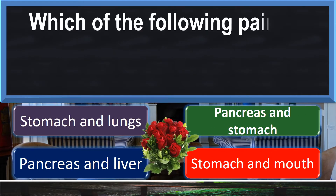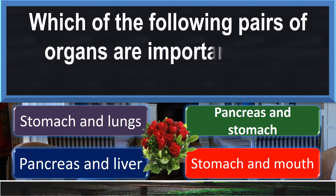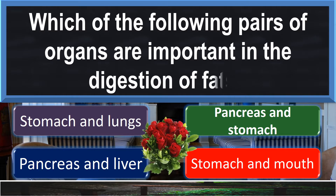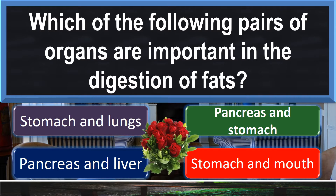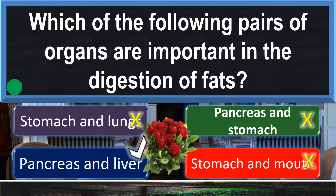Which of the following pairs of organs are important in the digestion of fats? Pancreas and liver.